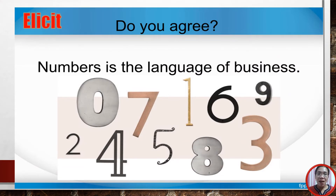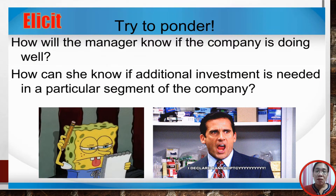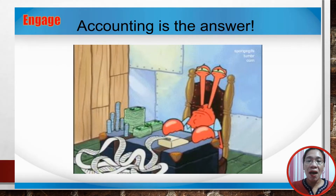Before we proceed, I have important trivia for you to ponder. Do you agree that numbers is the language of business? How will the manager know if the company is doing well? How can he or she know if additional investment is needed in a particular segment of the company? Accounting is the answer. To keep track of the status of the business, a business entrepreneur must have a technical know-how of accounting.